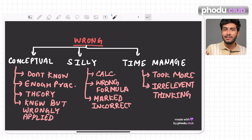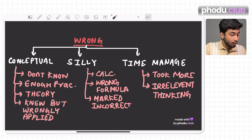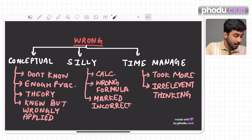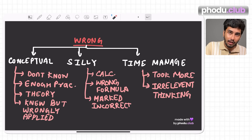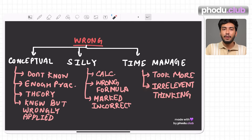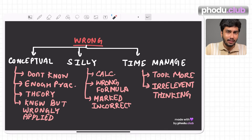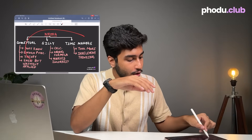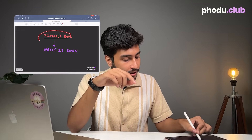For example, if the question asks 'which of the following is incorrect' but you mark the option that was correct — you must go deep into that. For time management mistakes — whether you took more time and got it right, or more time and got it wrong — note down why you took extra time. Was it ego or another reason? Also watch for irrelevant thinking on a particular question, which can cost you marks.